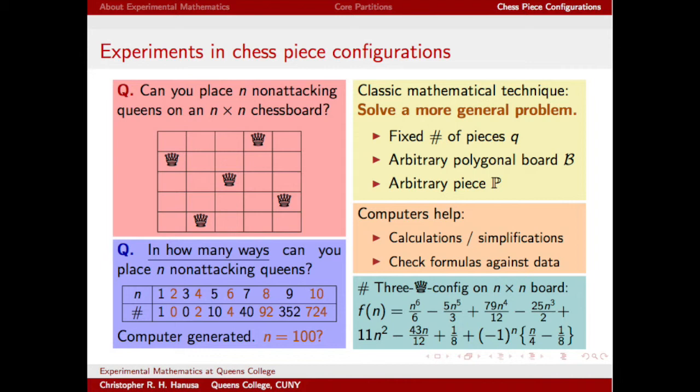During the process, we used computers for doing calculations or simplifications that would be too tedious or too error-prone by hand. And we also used it to check our theory against collected data. For example, here is the exact formula for the number of ways to place three non-attacking queens on an n-by-n chessboard. While this particular formula is not new, our method is the first one that can be applied in a wide range of situations, and has strong mathematics behind it.